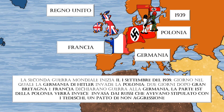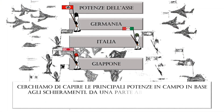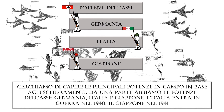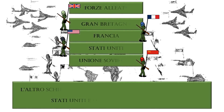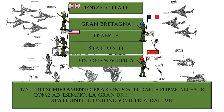Let's understand the major powers by their deployments. On one hand, we have the Axis powers: Germany, Italy, and Japan. Italy entered the war in 1940, Japan in 1941. On the other side were the Allied forces, such as Britain and France, the United States, and the Soviet Union, all since 1941.